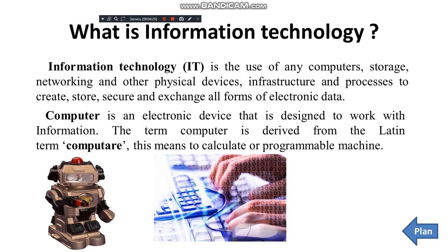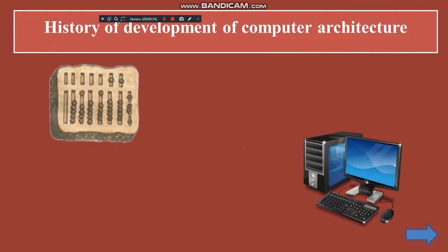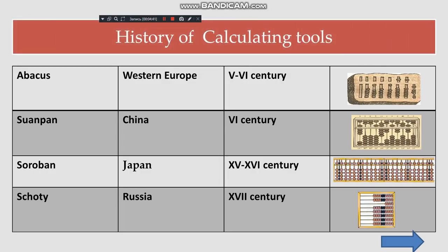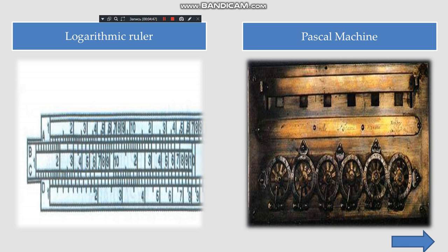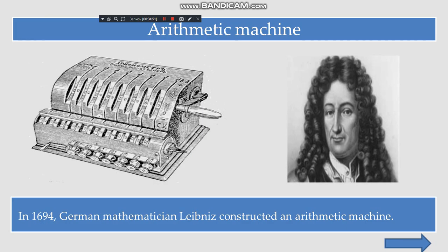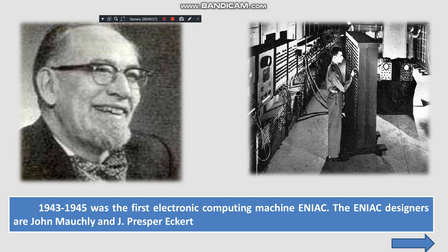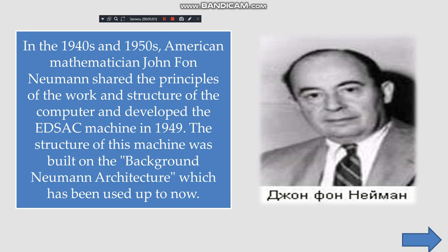History of development of computer architecture — history of calculating tools includes the abacus (swanp and soroban), used in Russia, Eastern Europe, and Western Asia. Then came the arithmetic machine and the analytical engine of Charles Babbage. In the 1940s and 1950s, American mathematician John von Neumann shared the principles of the work and structure of the computer and development of the EDVAC machine. The structure of this machine was built on Von Neumann architecture, which has been used up to now.